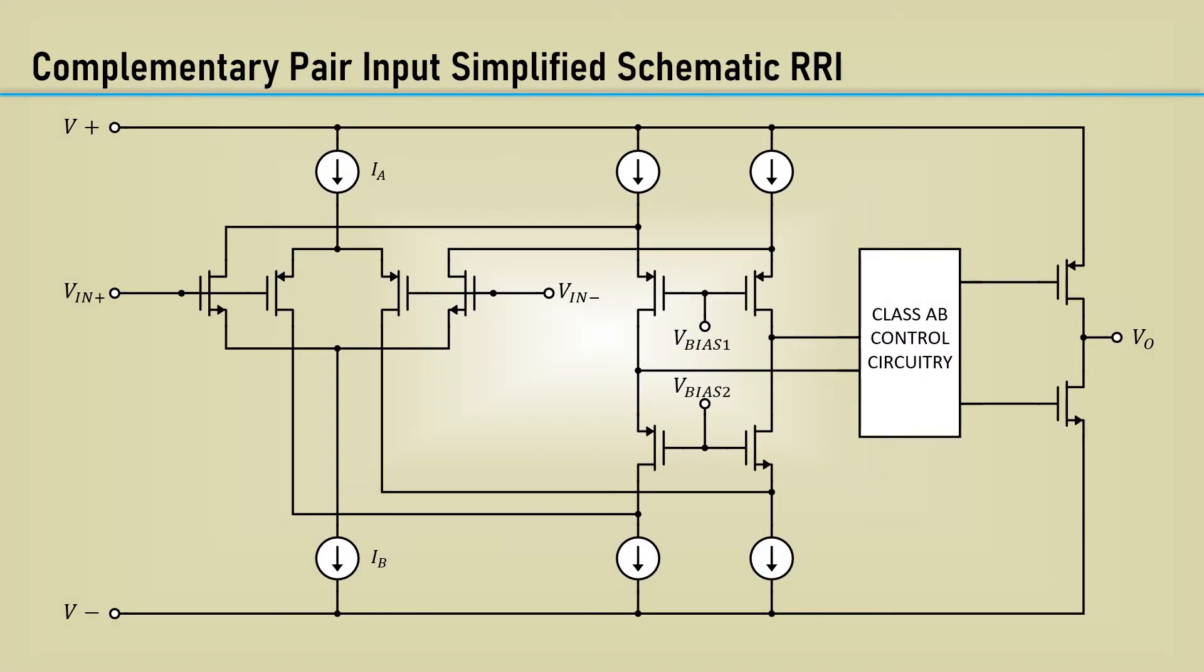Well, that's what a rail-to-rail op-amp input is. The differential pair input contains a set of NMOS transistors. Those can cover the ranges above its VGS threshold and the drop across its current source, IB.